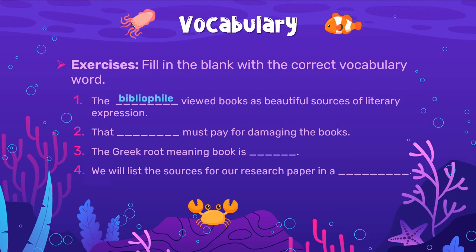Number one would be bibliophile. Someone who loves books would see them as beautiful sources of literary expression. By the way, the word 'philo' has to do with love, so 'book love' is basically what that word would literally translate to — a book lover. Number two, biblioclast would be the kind of person who would damage books. Number three, biblion — or if you wrote biblio, that's fine. Number four, bibliography — bibliography would be where you would list the sources.